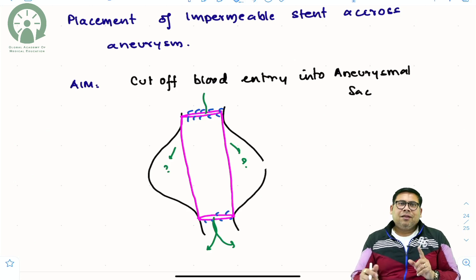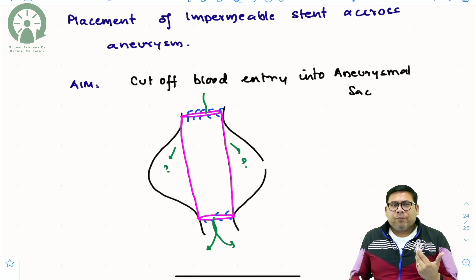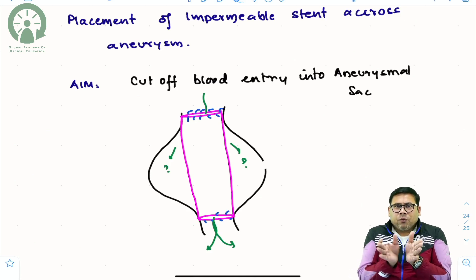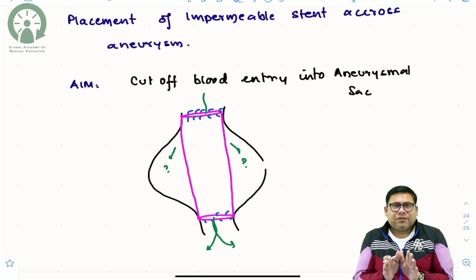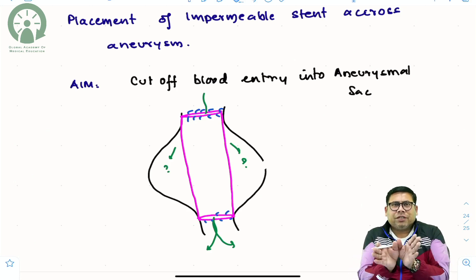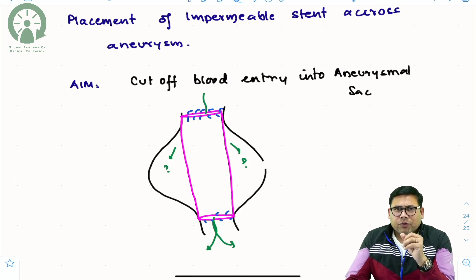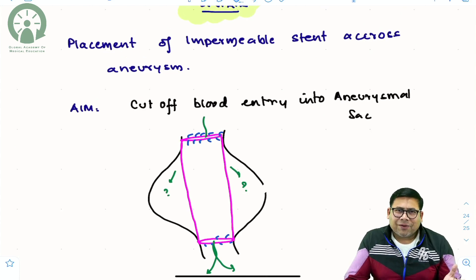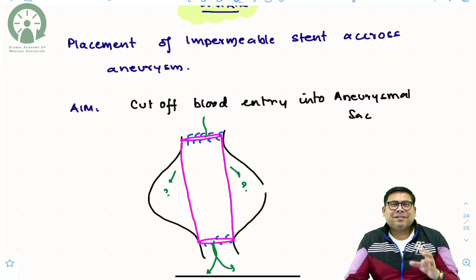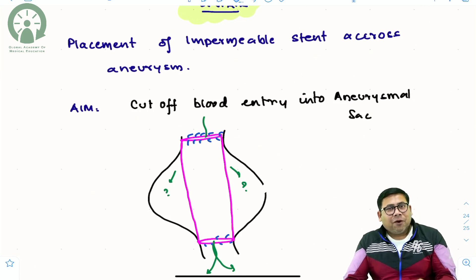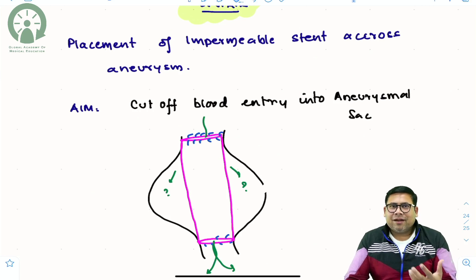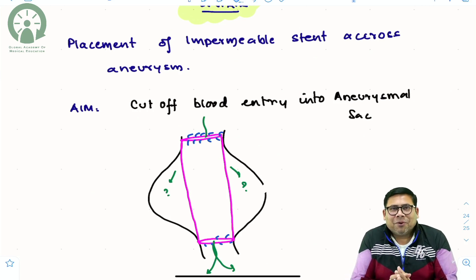Could EVAR be used for juxtarenal or suprarenal aneurysms? Theoretically yes, using fenestrated stents where limbs can be taken out into the renal artery. But practically, the diameter of the renal artery is far less than the aorta, and there is a high incidence of renal artery thrombosis, so practically we don't do it. In thoracic aortic aneurysms, the equivalent procedure is known as TEVAR. I hope you enjoyed this crisp video — do comment, share it with friends, subscribe to the channel, and thank you.